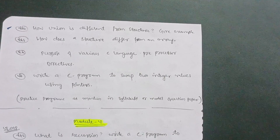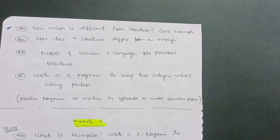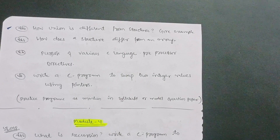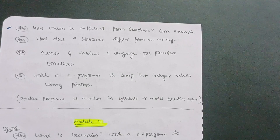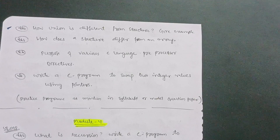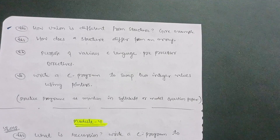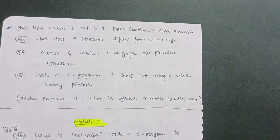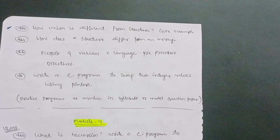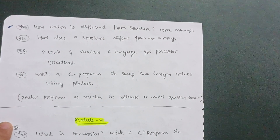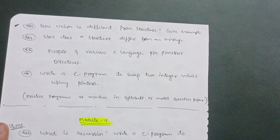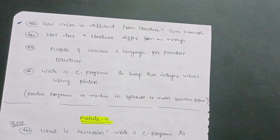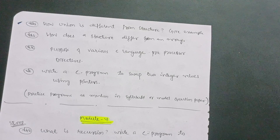As you already know, VTU sets difficult papers for backlog students — much more hectic than regular subjects. If you are a diploma student, you may not know how backlog papers are set by VTU evaluators. It is very difficult — sometimes easier, but most of the time they set difficult papers for backlog students. So you have to do a little bit of hard work to cover these subjects. Fear not — I hope you will clear this subject with ease.